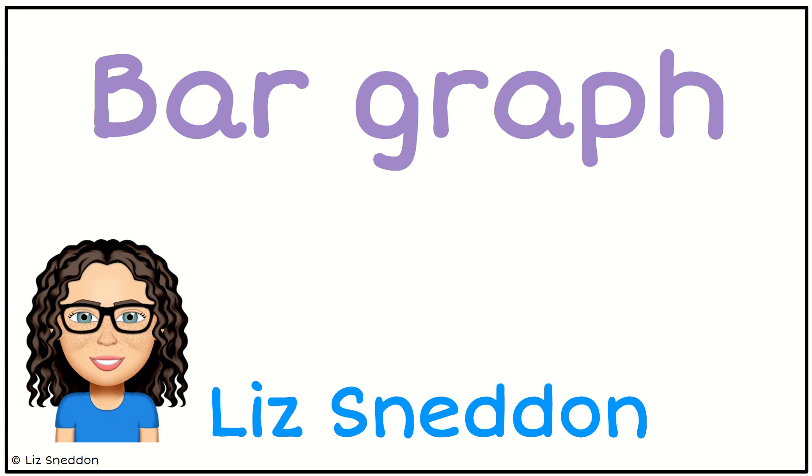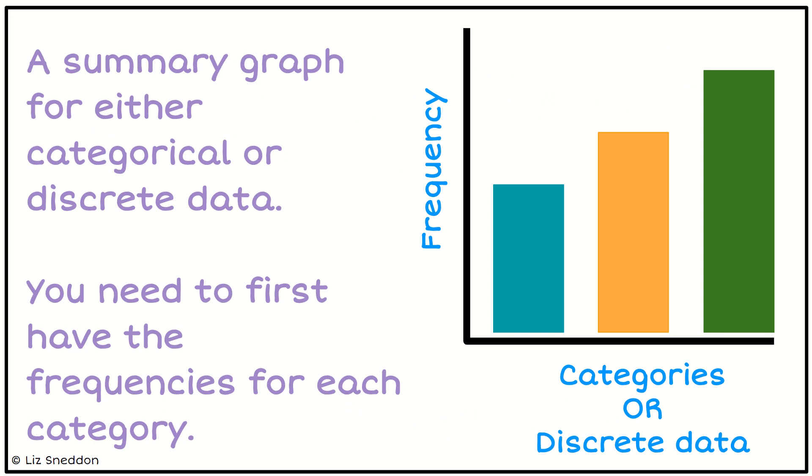Hi, it's Liz Nedden. Let's have a look at making bar graphs. So a bar graph is a summary graph, and we either use categorical data or discrete data.